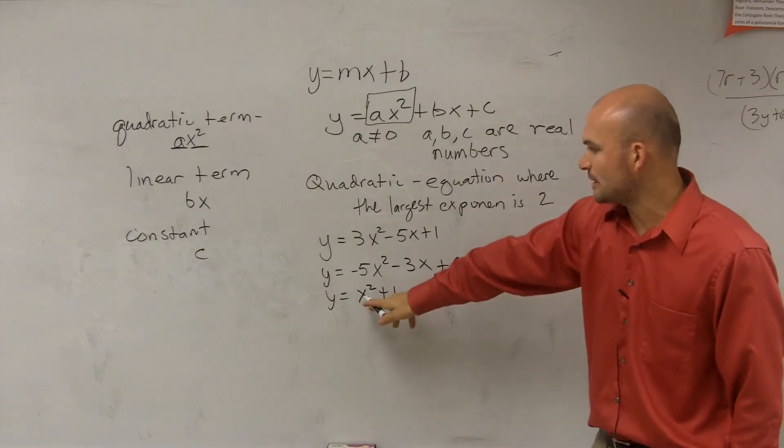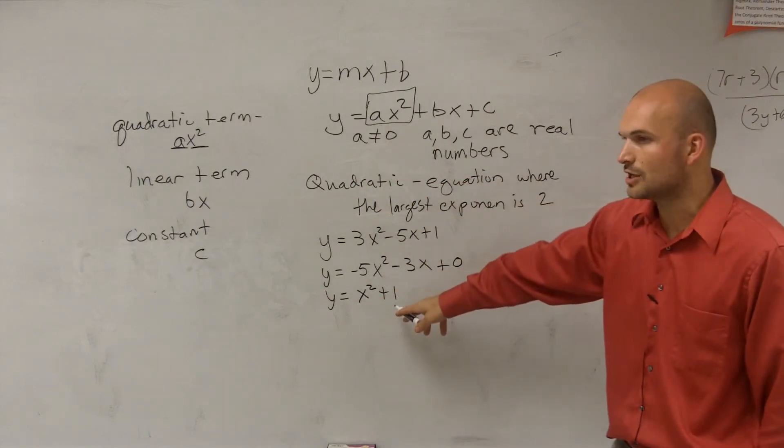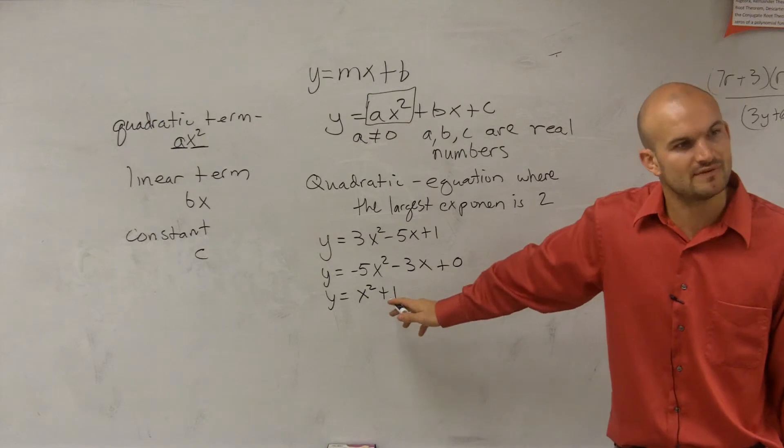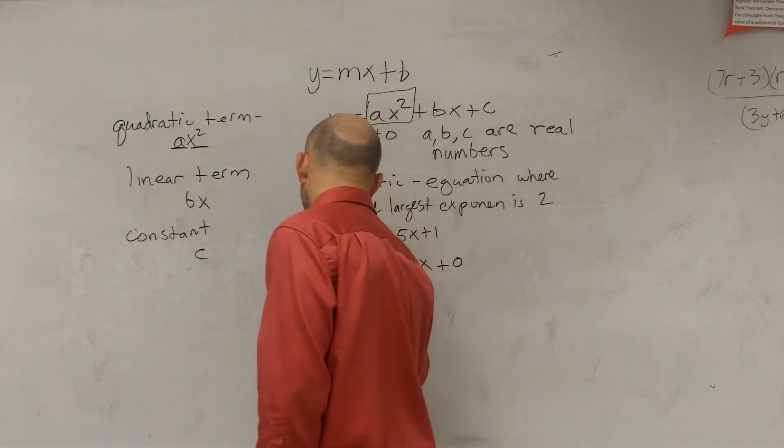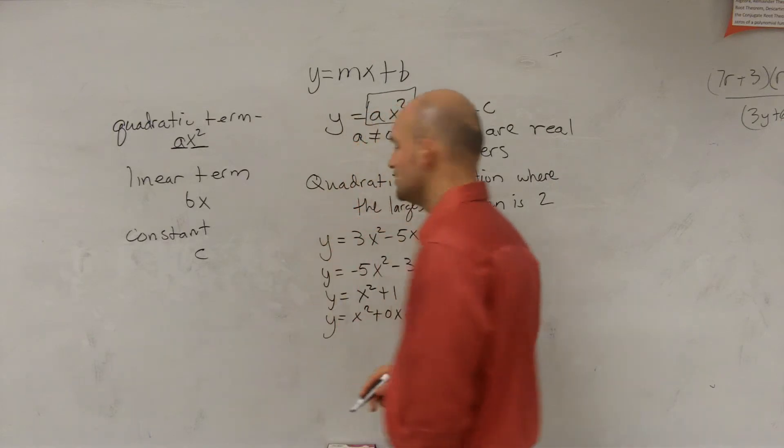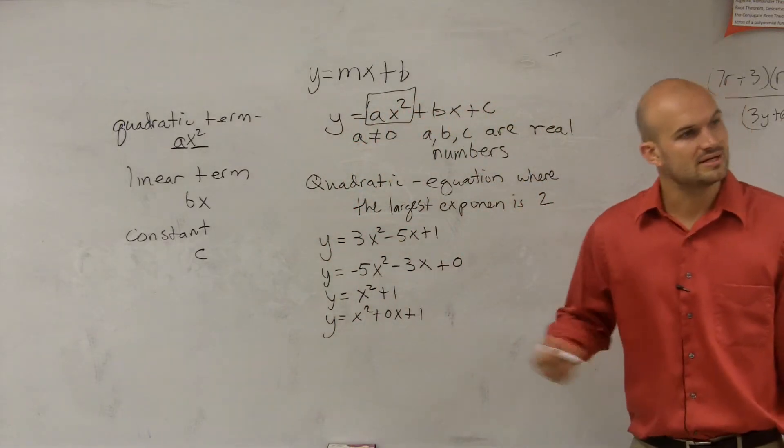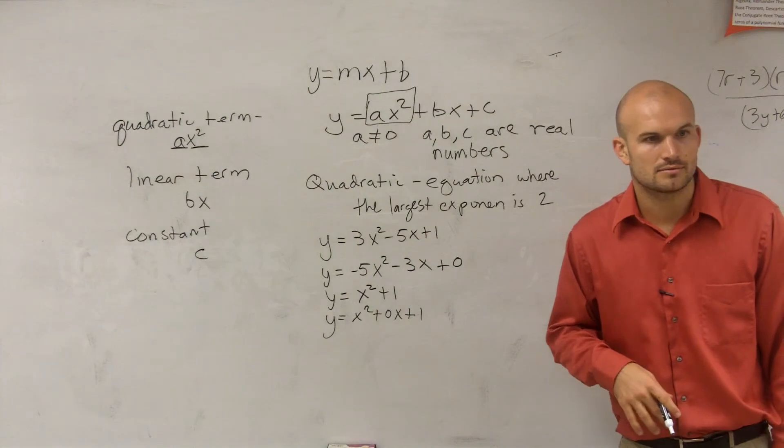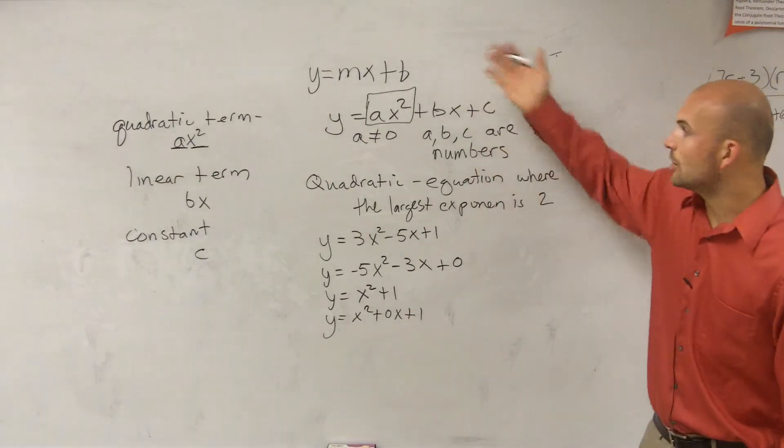So if I'm looking here, I have my quadratic term. I have my constant term. But how can I write my linear term if it's not written there? Well, you can write it as y equals x squared plus 0x plus 1. Because 0 times x is what? Zero, right?